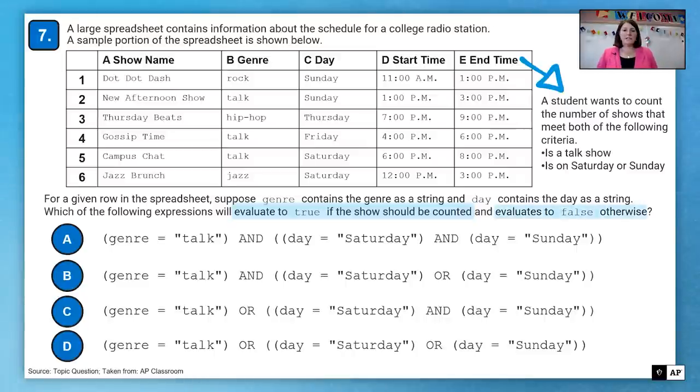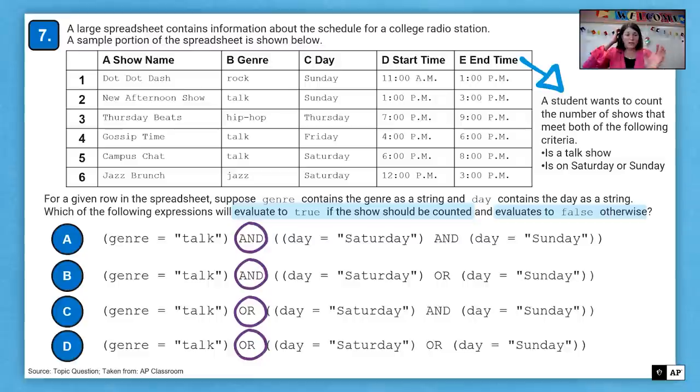Which of the following expressions will evaluate to true if the show should be counted and evaluates to false otherwise? So again, we want to count it if there's a talk show and if it is on Saturday or Sunday. Okay, so we take a look here. And so we clearly know we want both those things. So we need to see here the fact that we're talking about the genre and then and or or the day.